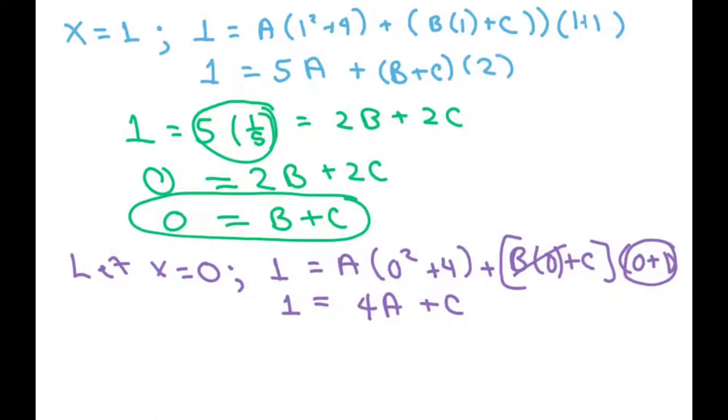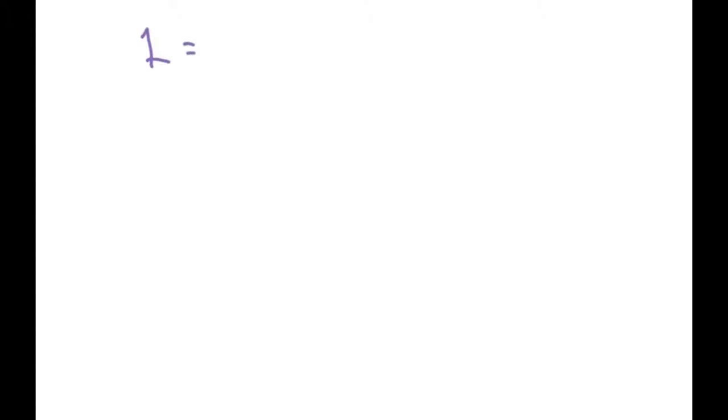We already know that A is 1/5, so you get 1 equals 4(1/5) + C. Now this is 4/5, so you get 1 equals 4/5 + C. You could just mentally know that C is going to be 1/5, or this is 5/5, so this would be 5/5 - 4/5 equals C, so 1/5 equals C.